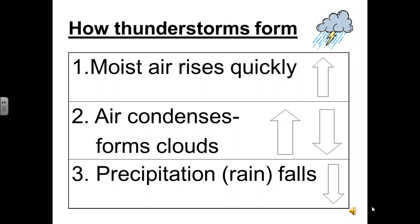The clouds have both ice crystals and water droplets. In the storm's second stage, precipitation starts to fall, which pulls some air down with it. The storm now has both upward and downward moving currents.